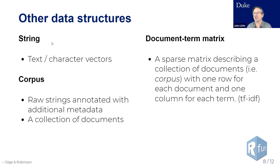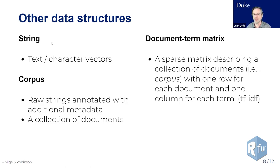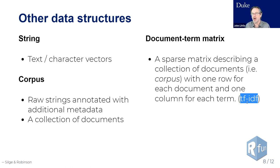There are a couple of other important data structures. We're working with string or character data, which can all be in a vector. The term corpus refers to a collection of documents — not just the string data, but also metadata about the documents. Then there's the concept of a document term matrix, which is a sparse matrix with one row for each document and one column for each term — that's where we get into TF-IDF.